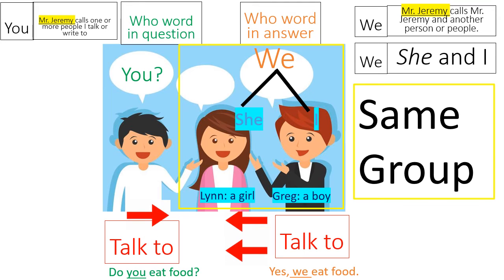When the who word in the question is 'you,' the who word in the answer is 'we.' Notice again: this boy in the white shirt is not part of the same group. These two people inside the yellow square are part of the same group — she and I together is 'we.' So if this boy asks, 'Do you eat food?' these two people answer, 'Yes, we eat food,' or 'No, we don't eat food.' That's an anytime question.